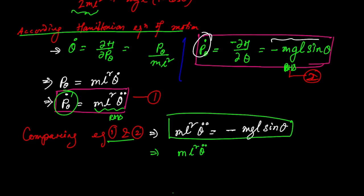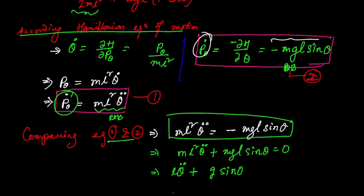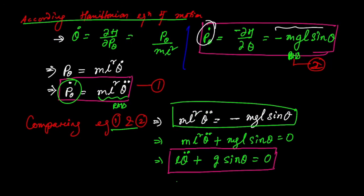Simplifying, we get ml²θ̈ + mgl sinθ = 0. Dividing both sides by ml, we get lθ̈ + g sinθ = 0. This is the equation of motion for a simple pendulum. I hope you have understood it. If you find this helpful, please share it with your friends, and if you are new to my channel, please subscribe. Thank you for watching.